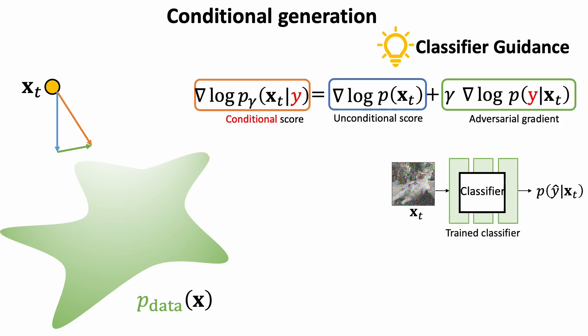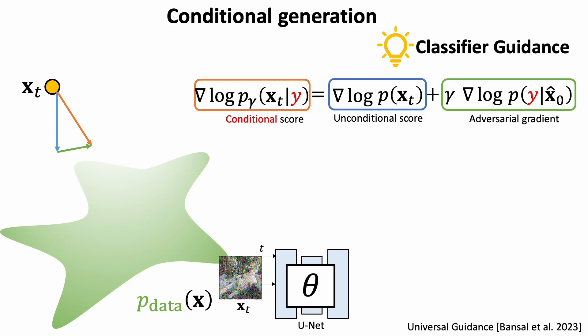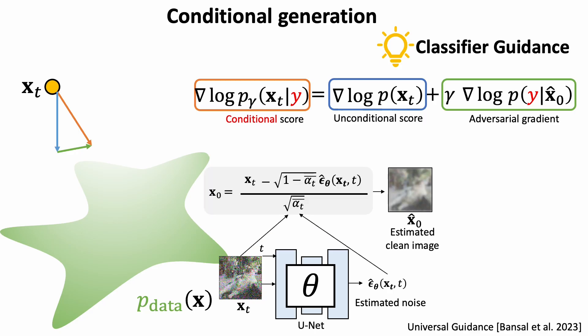Luckily, we can use the predicted noise to estimate a clean image. This estimated clean image is a bit blurry, but off-the-shelf classifiers are usually fairly robust to this. This is nice, but do we really need to use an additional classifier?